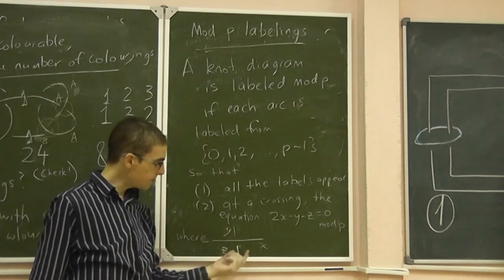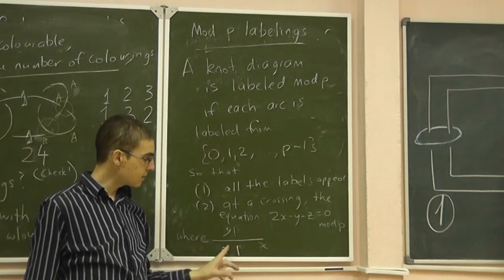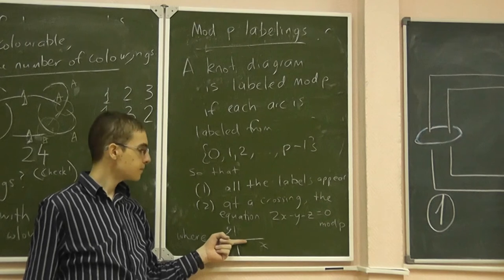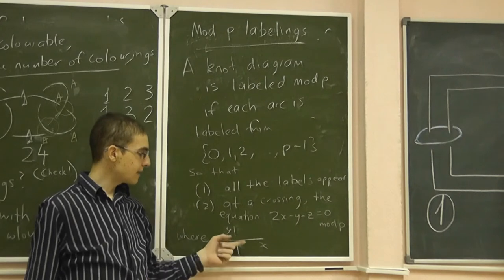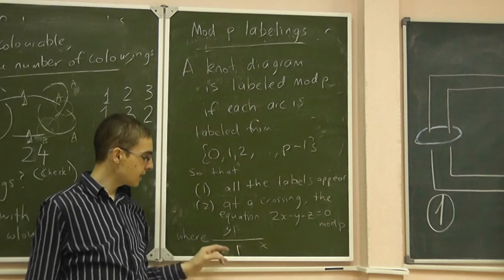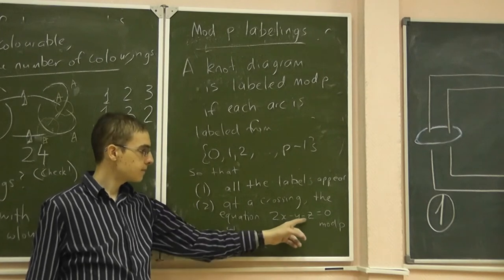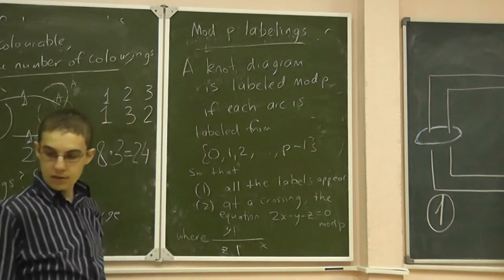So at each crossing, I need them labeled so that if I look at the over crossing and I look at that labeling, and I multiply that number by 2, and then I subtract the number I have on the other two crossings, then I get 0 mod p.